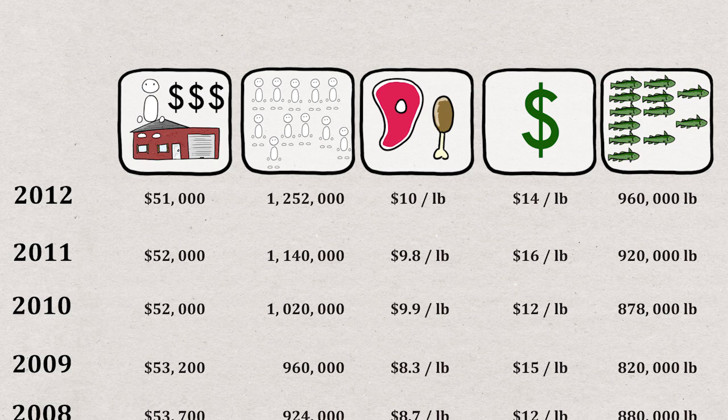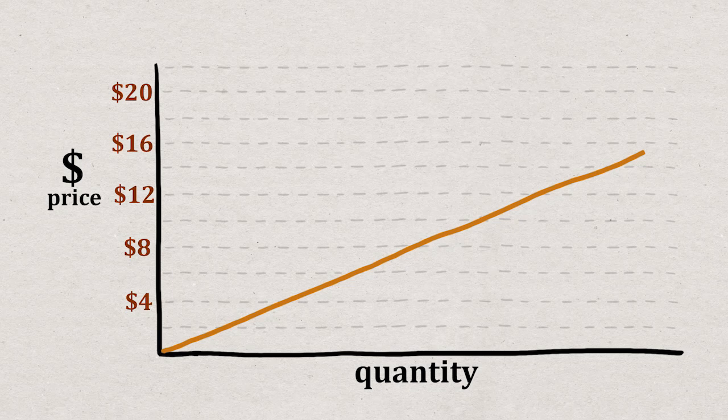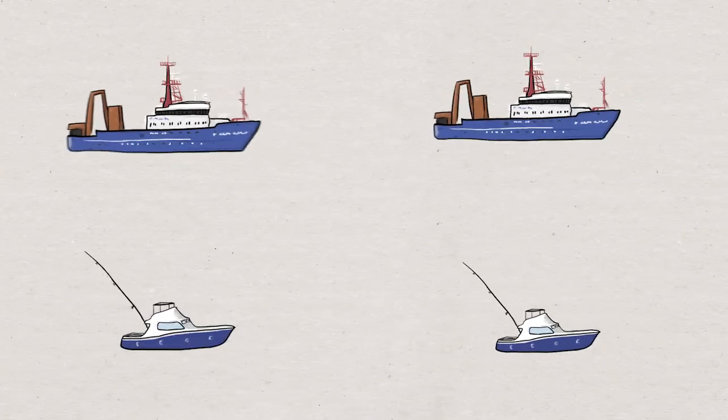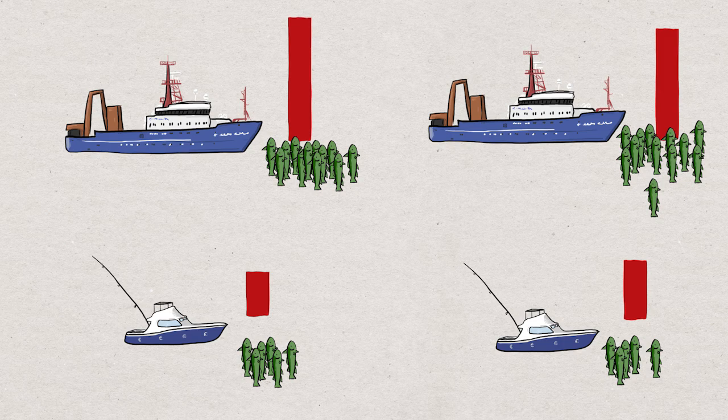The supply curve is going to be the amount of money it costs the fishing fleet to catch each additional pound or ton or net full or whatever unit we're talking about of fish. In practice, this is analyzing the costs of all the different fishermen at given levels of overall catch to build the supply curve.